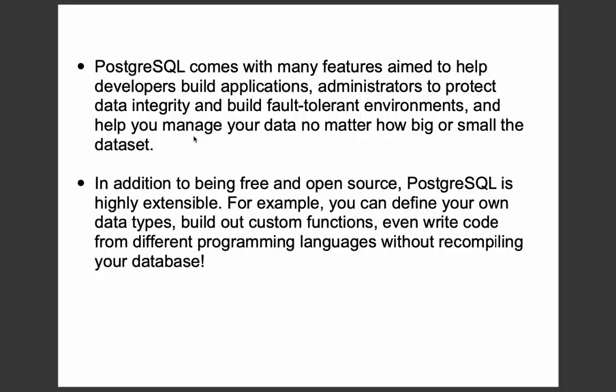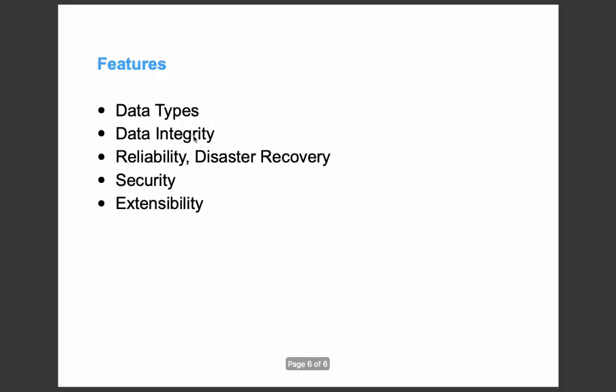That means a single database can be used with multiple programming languages. The main features of PostgreSQL include: data types — it supports most data types whether integer, float, string, character, or varchar; data integrity — all transactions should be performed independently; reliable and disaster recovery — it provides support for recovery; security — it is secure; and extensibility — we can write our own custom functions and data types.